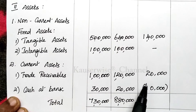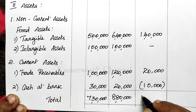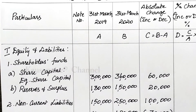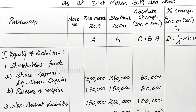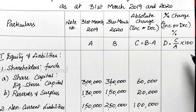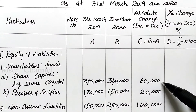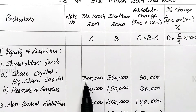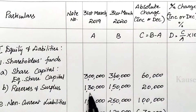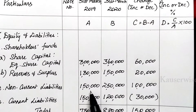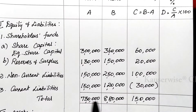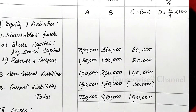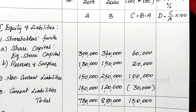Find the total absolute change for assets: 1,40,000 plus 20,000 is 1,60,000, minus 10,000 gives 1,50,000. This is the way to calculate absolute change — it may be increase or decrease according to the data. The final step is to find the percentage of change using the formula: absolute change divided by base year (previous year) into 100. We need to find the percentage change for each and every component of assets as well as liabilities.